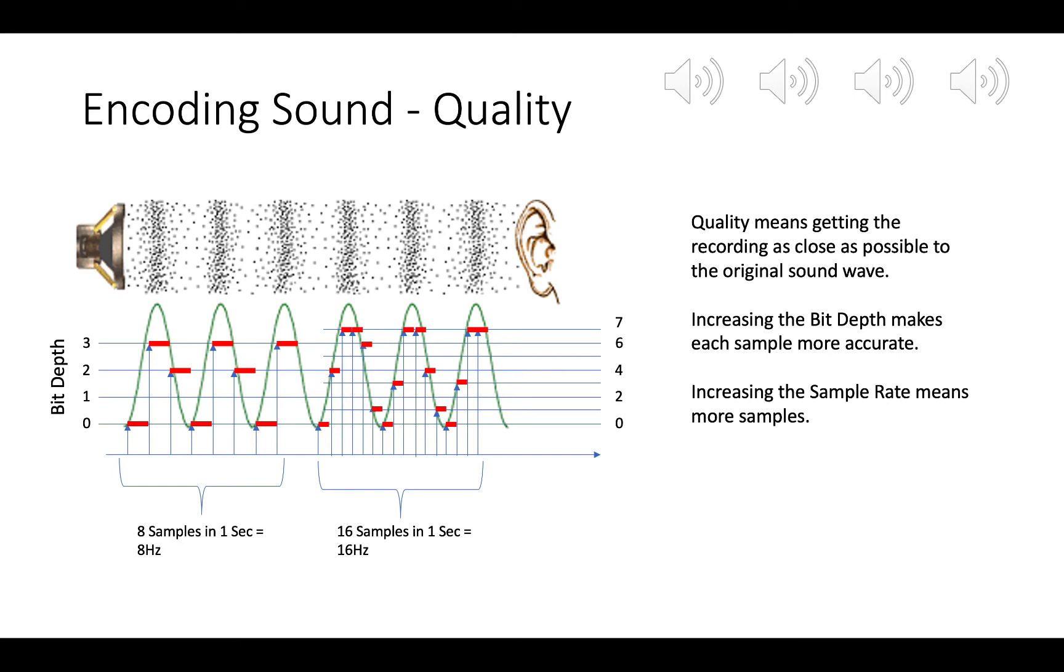So on the left-hand side here, we have a sound wave in green. We have 8 samples being taken in 1 second, which means that we have a sample rate of 8 hertz. And I have a bit depth of 2 bits, which means I have 4 levels: 0, 1, 2, 3. And then we can see that the red lines are pretty far away from the sound wave. So that's going to result in a pretty low quality recording.